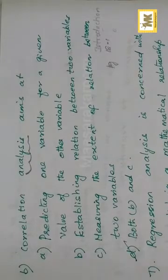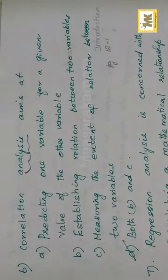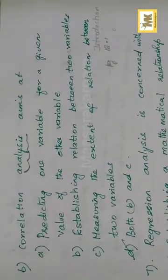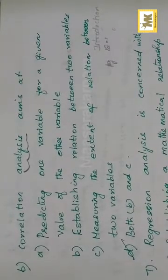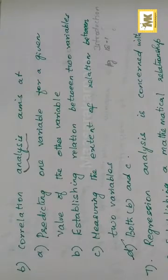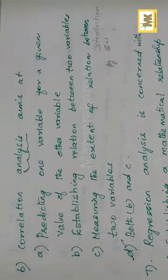B and C is right. Predicting — correlation positive or negative or zero correlated — that option is incorrect. The aims are establishing the relation and measuring it. So r is equal to the formula, the quantity we calculate. Establishing and measuring — both are right.